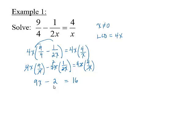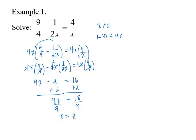The resulting equation is 9x minus 2 equals 16. We add 2 to each side to get 9x equals 18, then divide each side by 9 to get x equals 2. The value 2 is not a restriction — it does not cause a denominator to be zero. So the solution set is the set containing 2. We can check our work by replacing the variable in the original equation with 2.